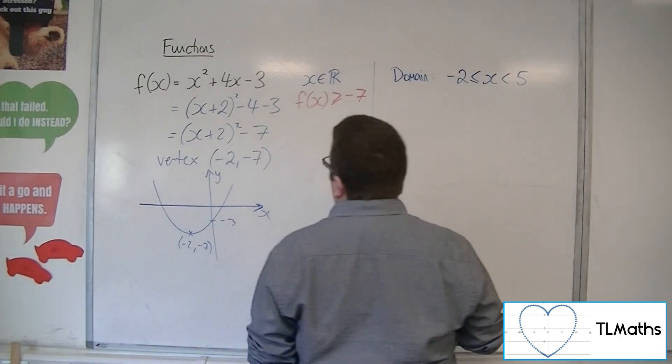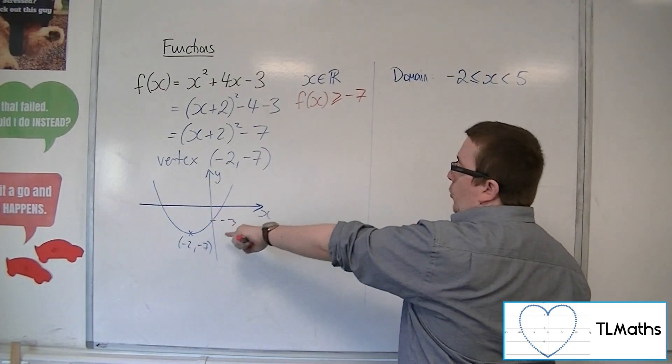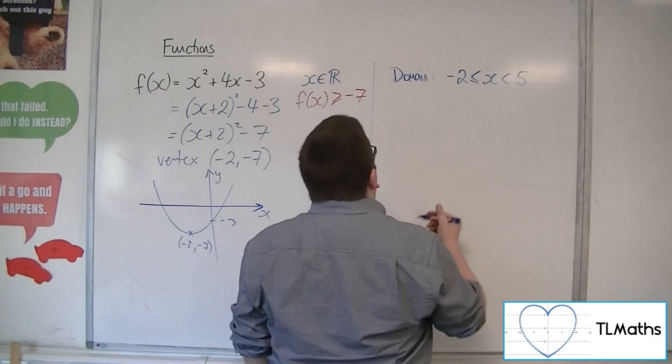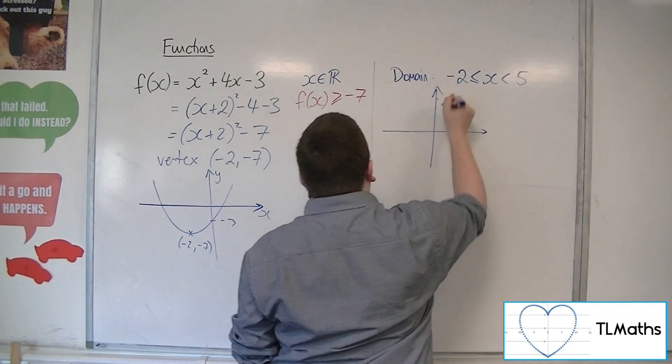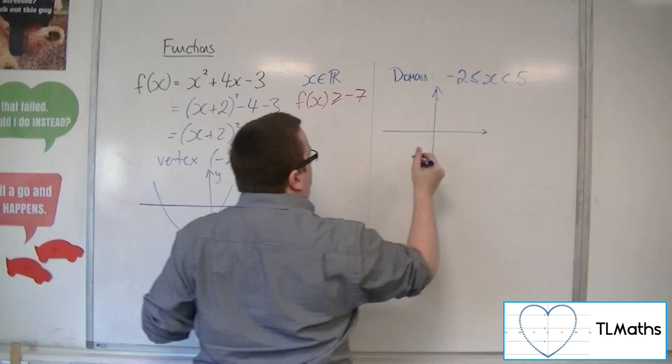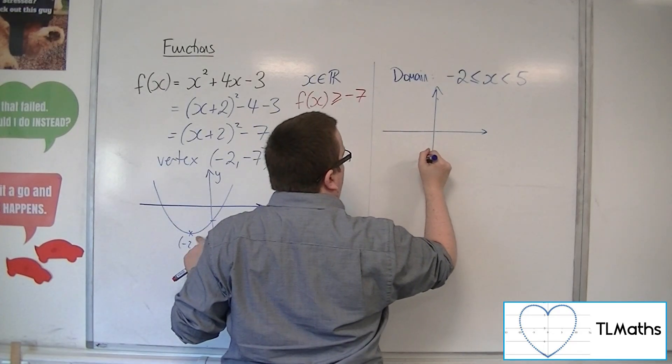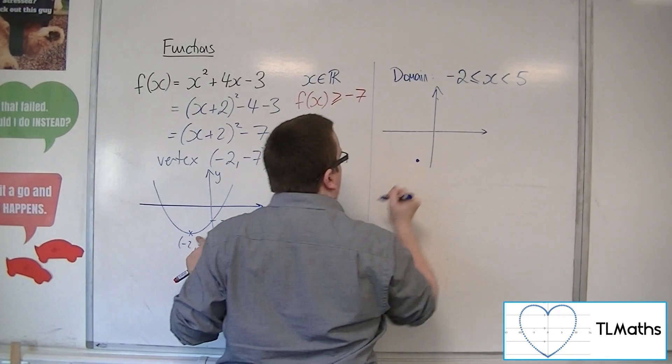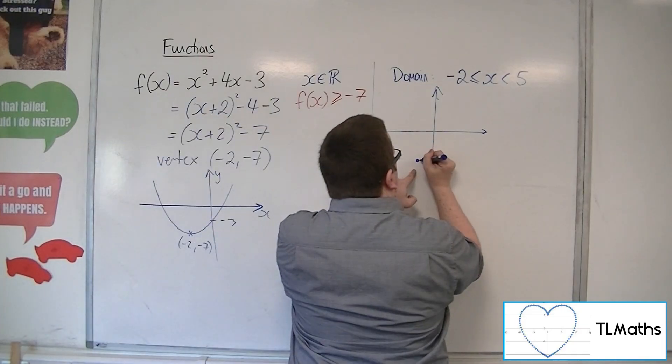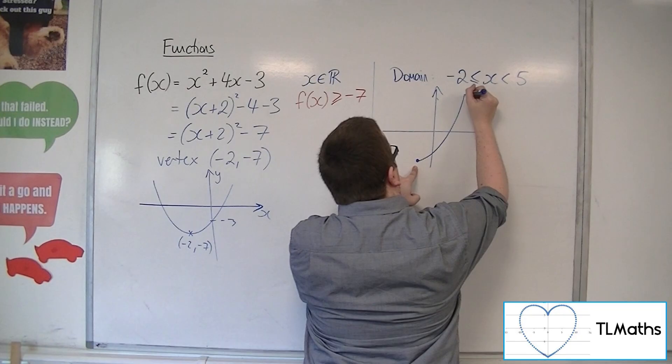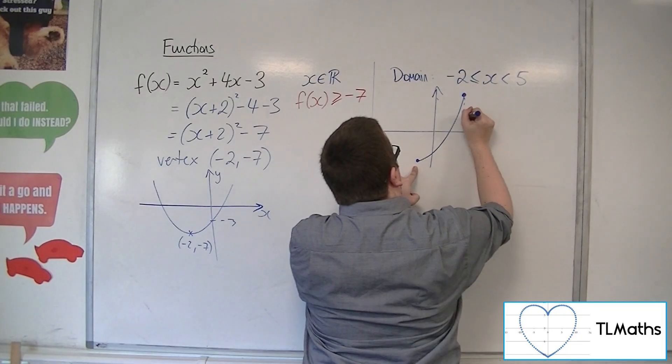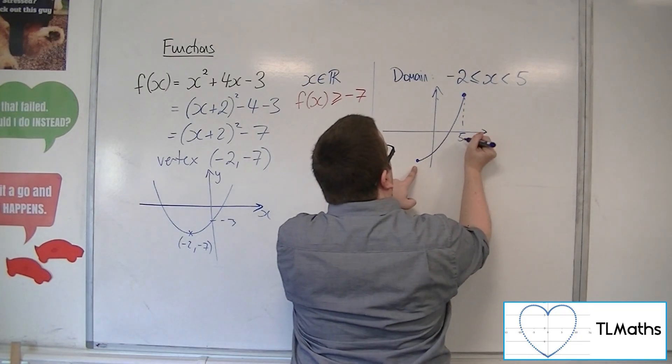So what would this look like? Well, I know what it looks like ordinarily, but now, because I've restricted the domain, it will start at (-2, -7). And then, because that's the turning point, the curve will look something like this and go up to a point where x is 5.